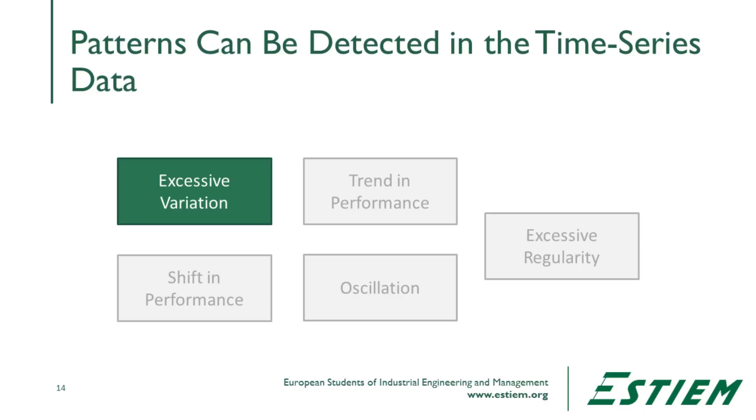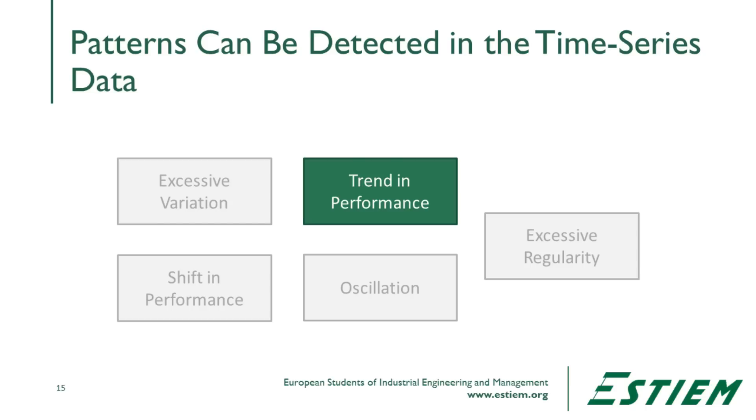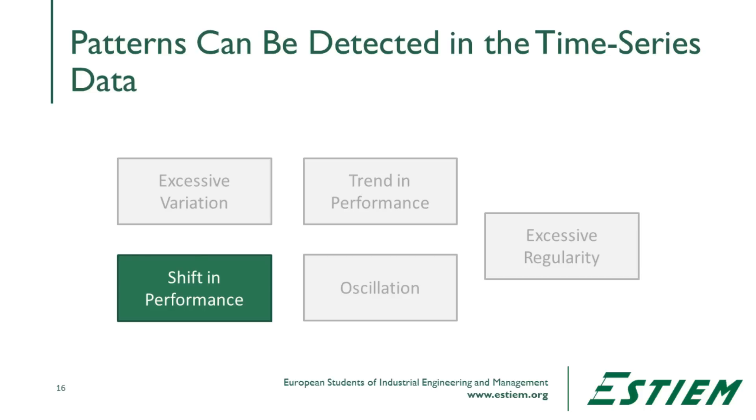There are different types of behavior patterns we can see. One is called excessive variation — when we have more variation than expected from a particular distribution. A second is trend in performance: sequential observations that are either escalating or decrementing the historically expected level of performance. We can also see a shift in performance, where observations suddenly move to a significantly higher or lower level than in the past.